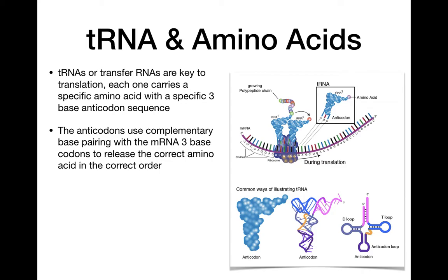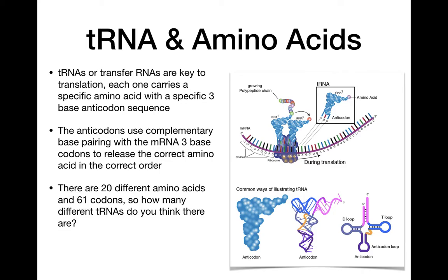There are 20 different amino acids, and we have 61 codons for them. So how many different tRNAs are there? Every codon that codes for an amino acid has to have a tRNA for it — so at least 20, but in fact there are more than that depending on the species. Some codons are just start and stop codons and don't require an amino acid. There are many more tRNAs than there are amino acids, because of all the different anticodons that can code for the same amino acid.